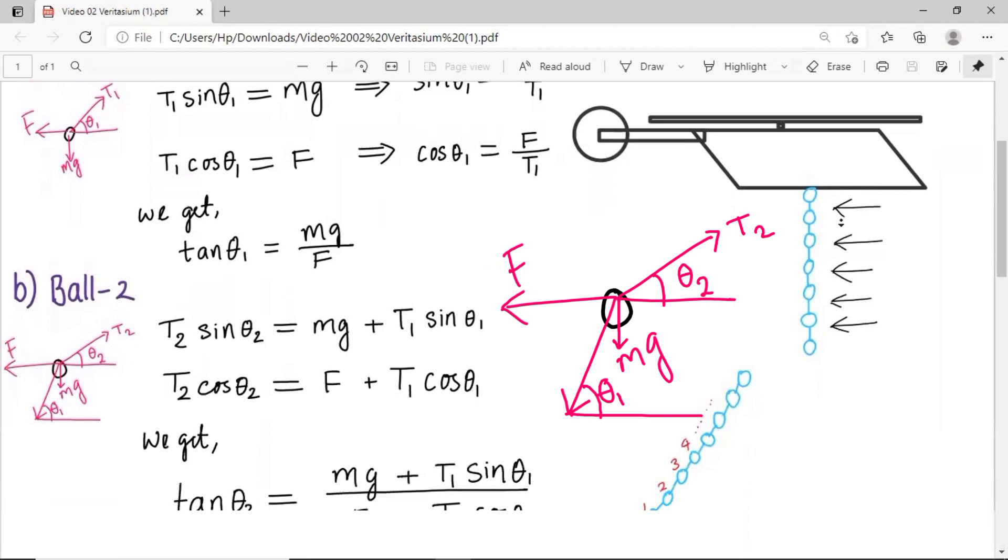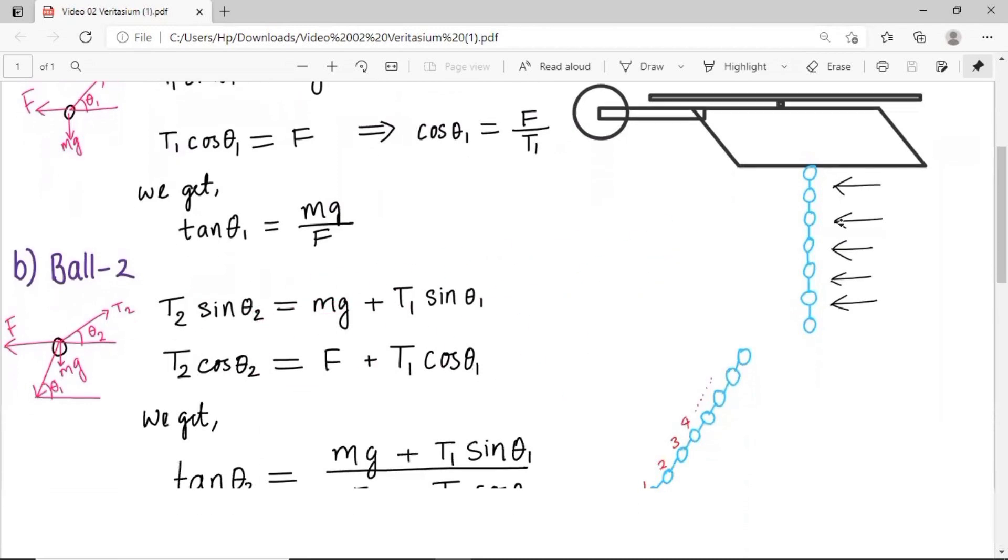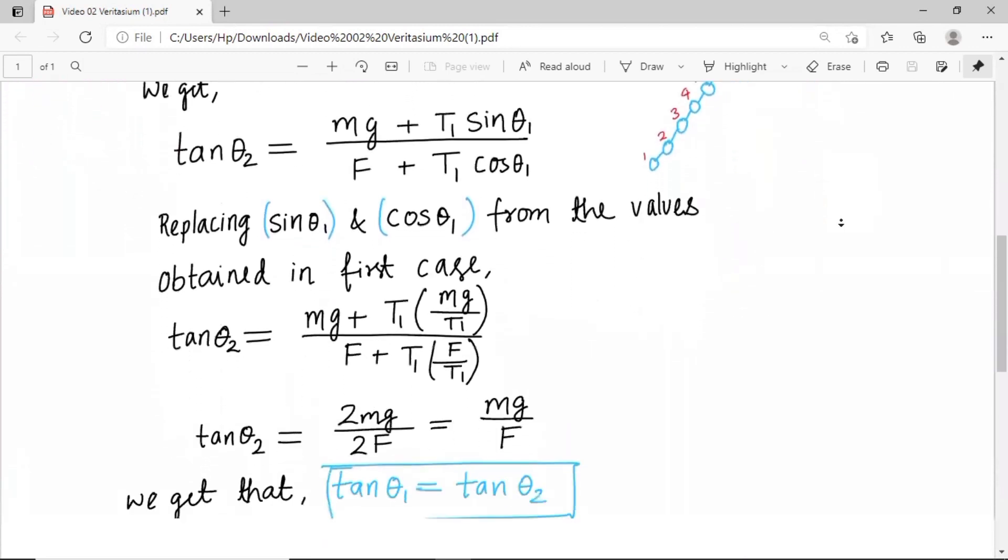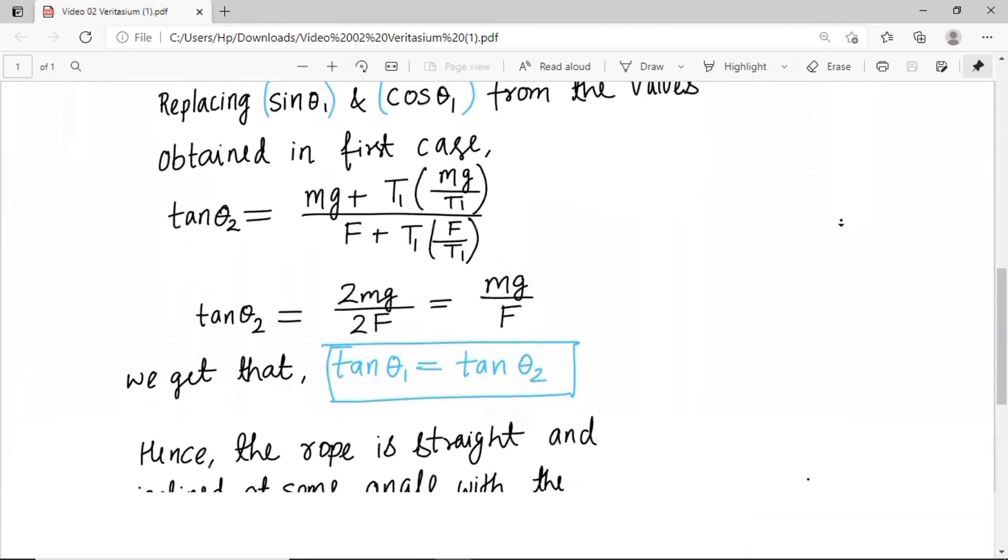Once again, here's some math, and solving these we get tan θ₂ equals tan θ₁. We can do this with all the beads in the rope, and we can say that the rope will be hanging straight at some angle.